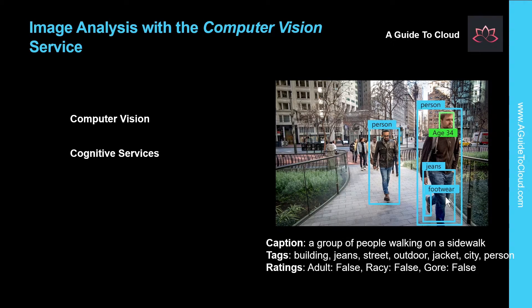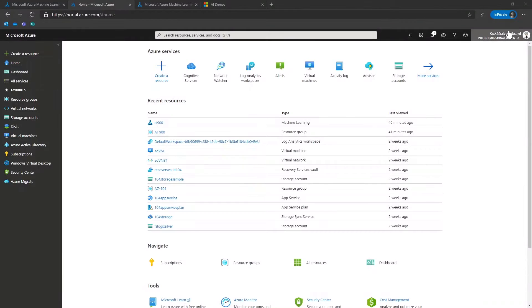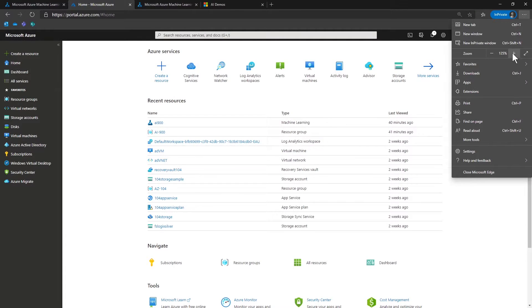The computer vision cognitive service provides a pre-trained computer vision model that can be used to analyze images. The first step towards using the computer vision service is to create a resource for it in your Azure subscription. You can either use a computer vision or cognitive services resource. Let me show you how to do that — I'm on my Azure portal right now.